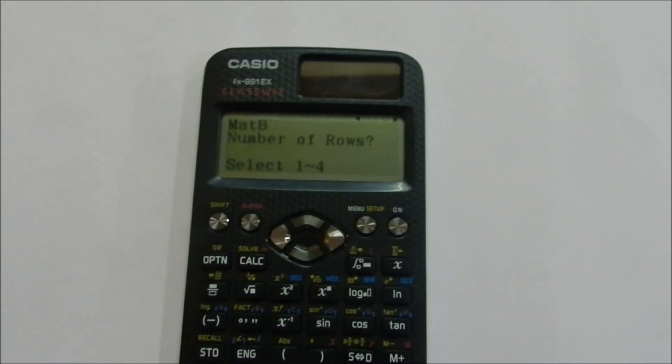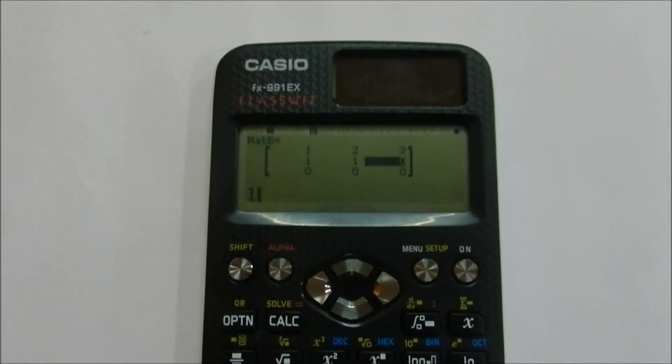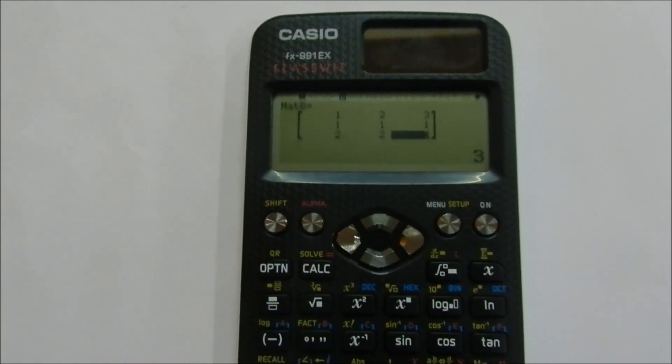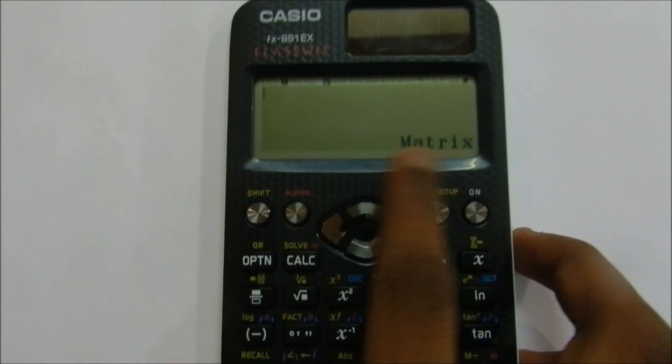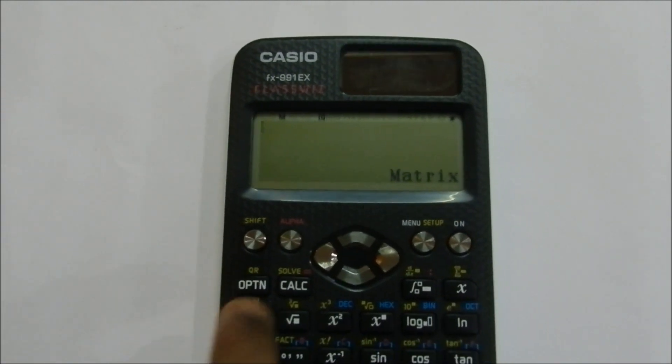Again, select the number of rows and columns. Let me take a simple matrix first. Now click AC. Make sure that you get a matrix written. This means that you are going in the right way. Click Option.